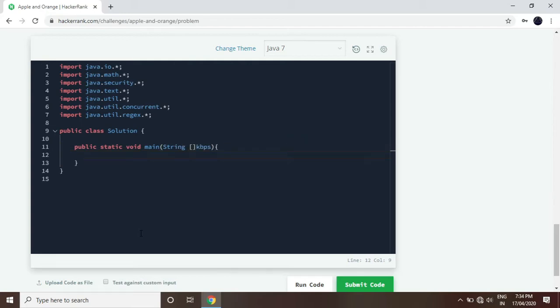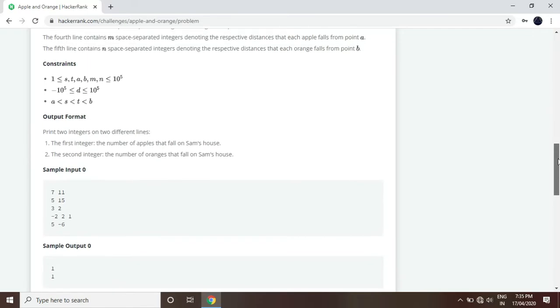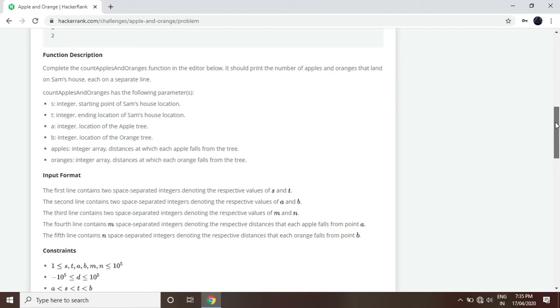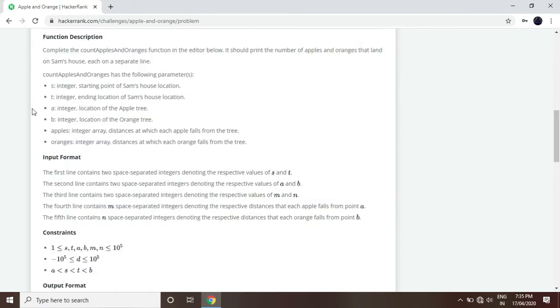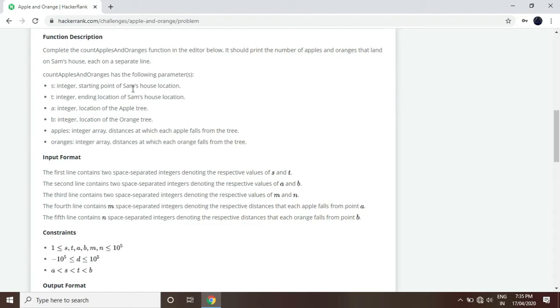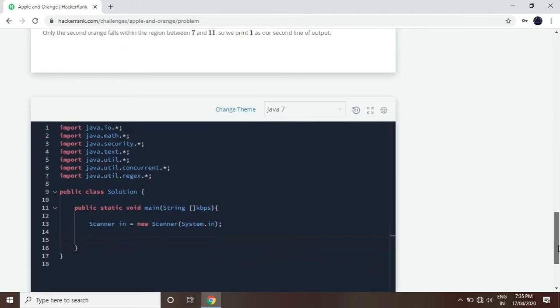We have made a main function. Now we will create a scanner class. Scanner class is made. Now we have input style. We will create variables. First of all, the input is S and T. Input format. We will create the starting point of Sam's house location.